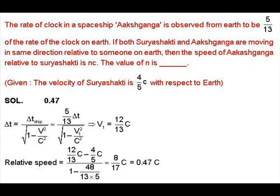Another spaceship Suryashakti is moving at 4c/5 velocity in the same direction as Aakashganga. We want to find the relative velocity of Aakashganga with respect to Suryashakti.